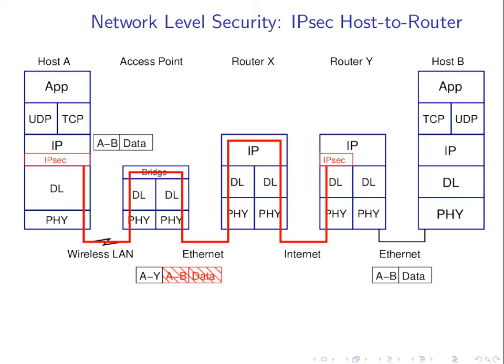Let's say that router Y and host B are inside SIT and I'm at home. I want to access the SIT network as if I'm inside SIT, but doing it from home. I don't want other people to be able to intercept the data when I access that network. One way to set it up is to configure IP sec on my home computer in a mode that creates a secure connection to router Y.